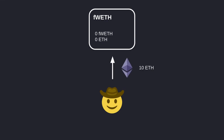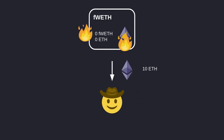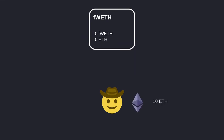The first way is you send ETH and you get the same exact amount of fWETH. You can hold on to this fWETH, and when you want to withdraw your ETH you would return the fWETH — that fWETH gets destroyed and you get back your ETH. So that's the first way of minting and burning fWETH.